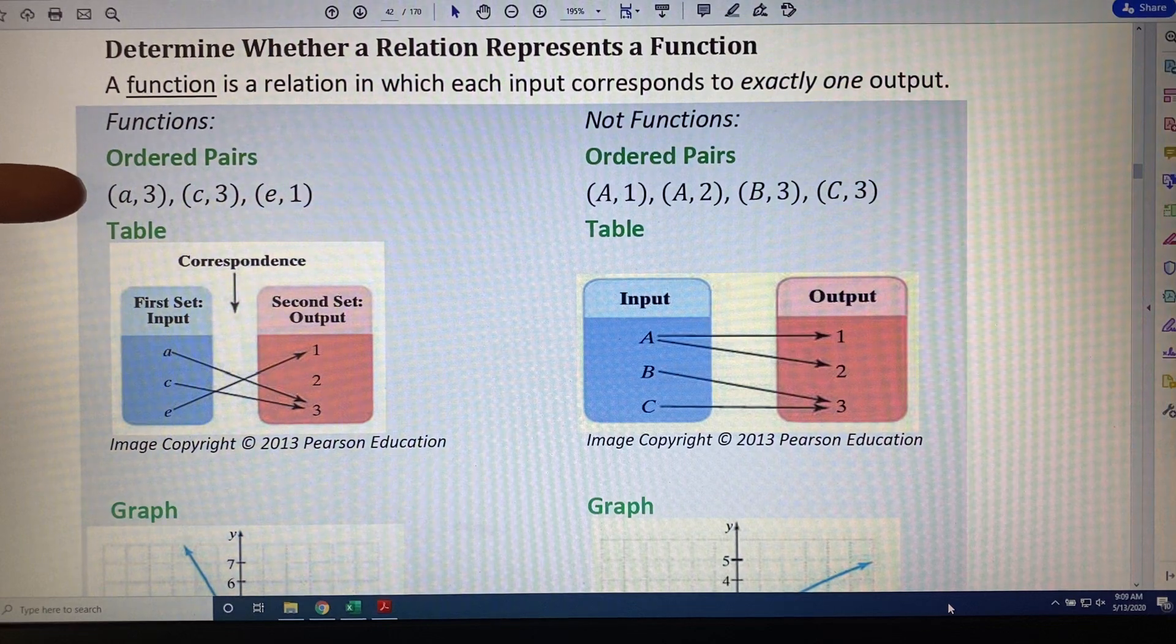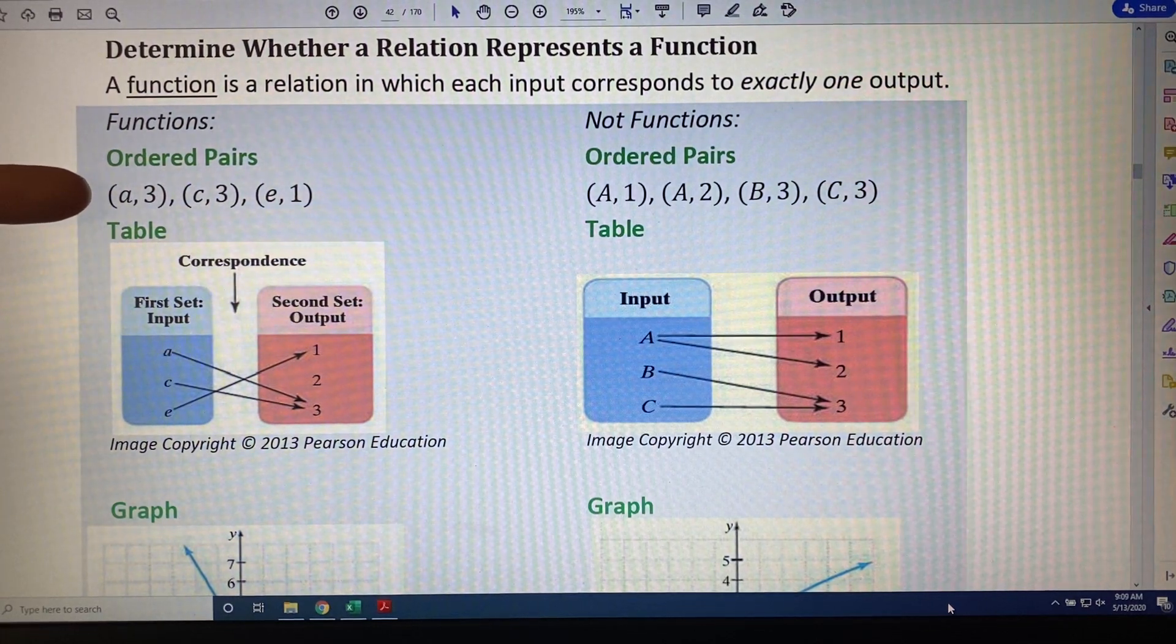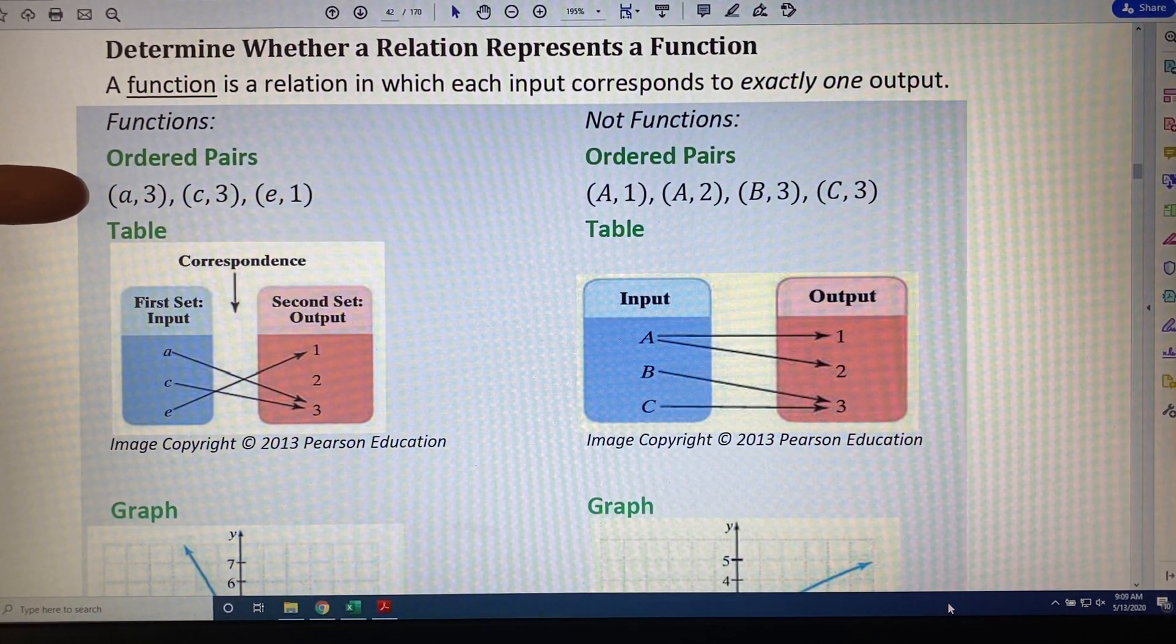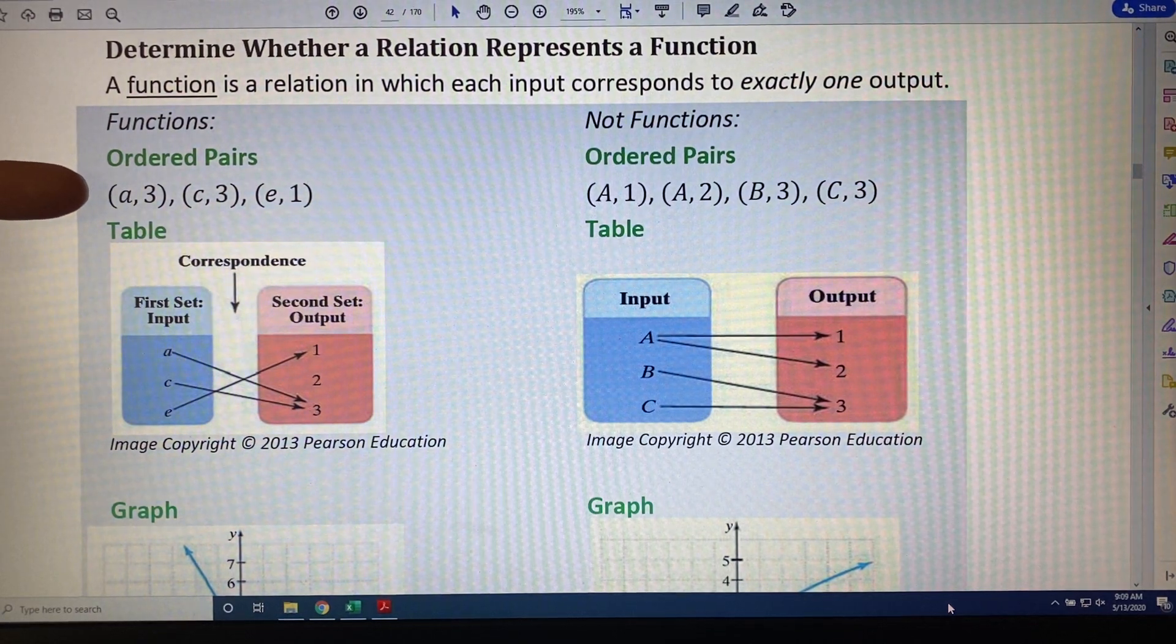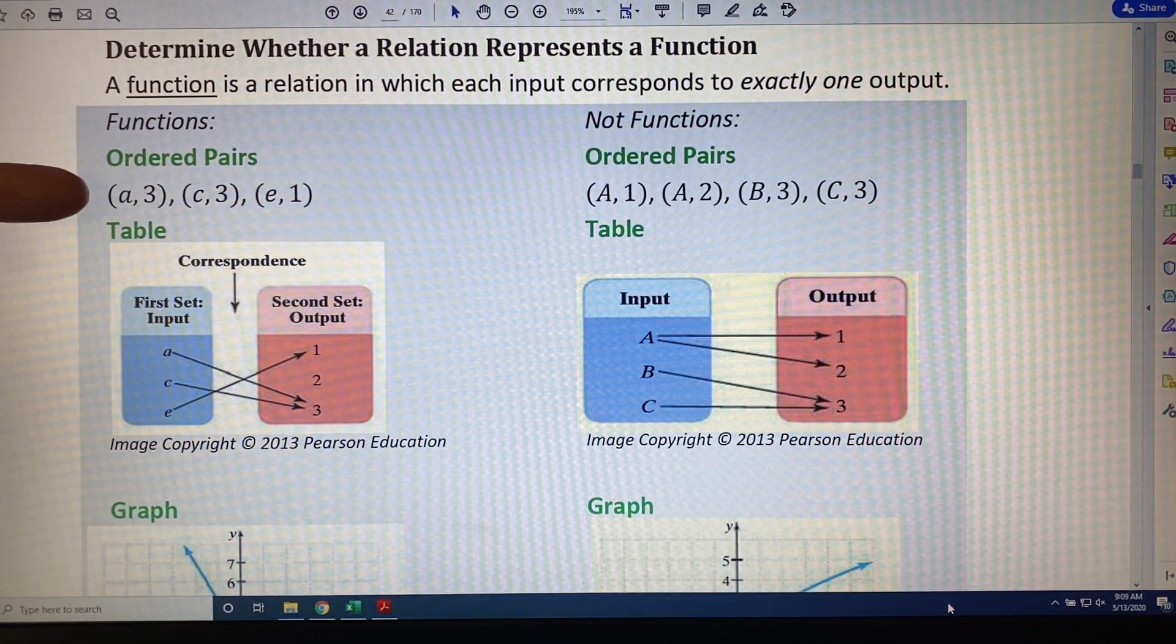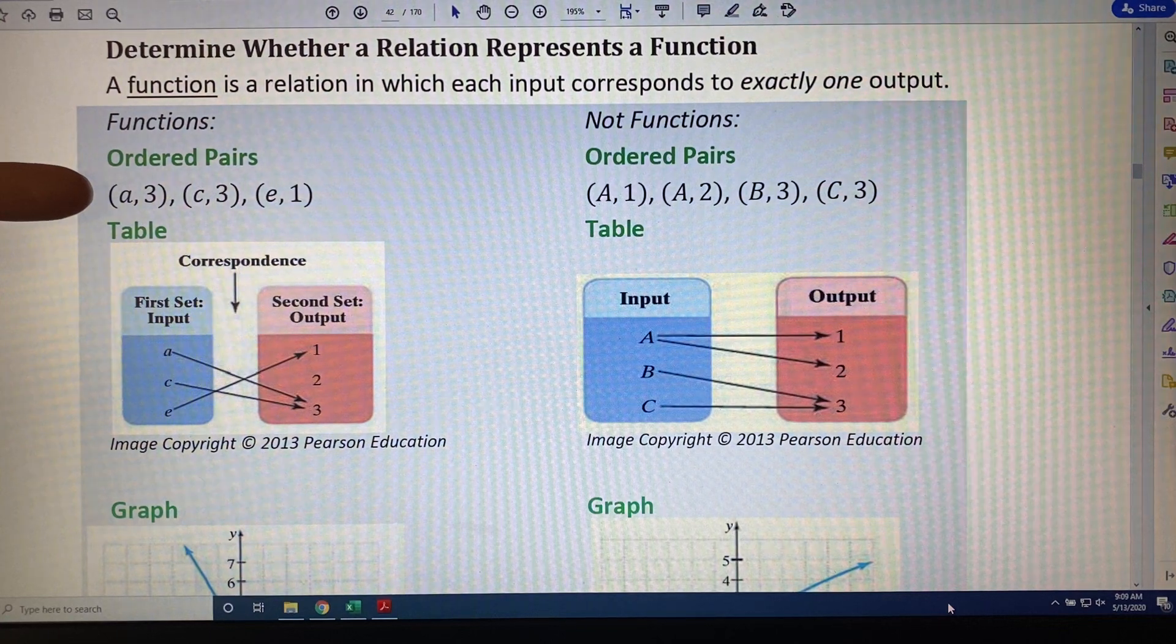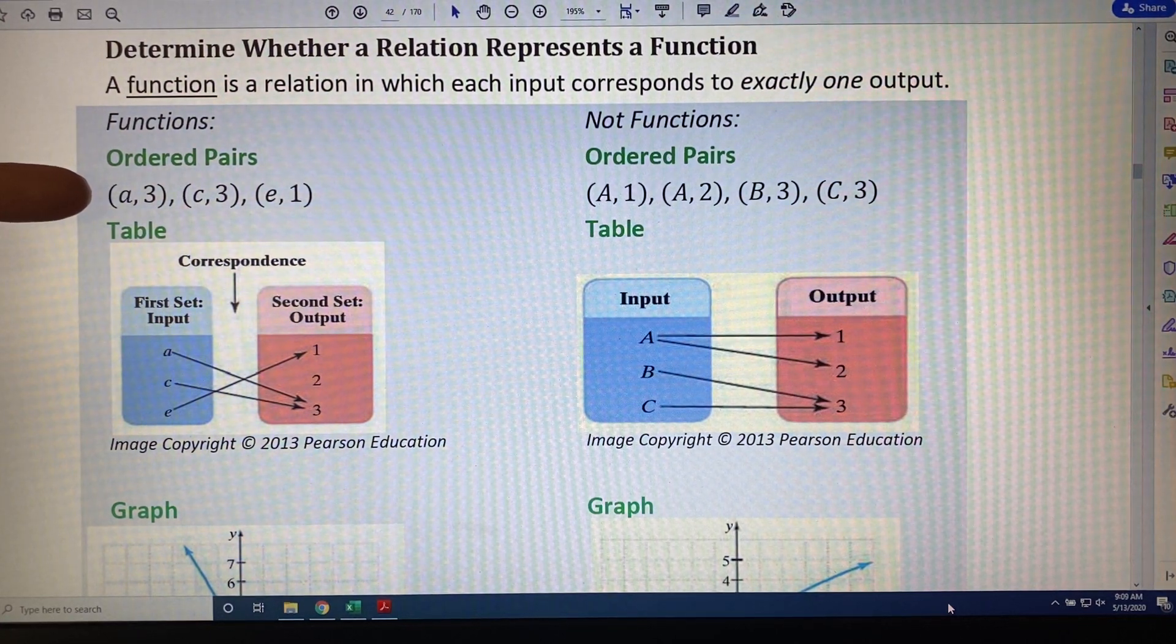When a relation is written in ordered pair format, the first coordinate, the x coordinate, is the input, and the second coordinate, the y coordinate, is the output. So, for example, a is the input, 3 is the output.